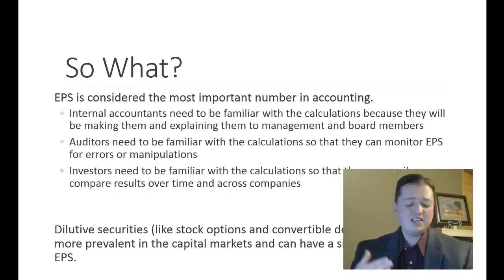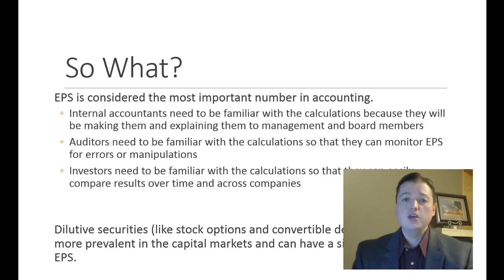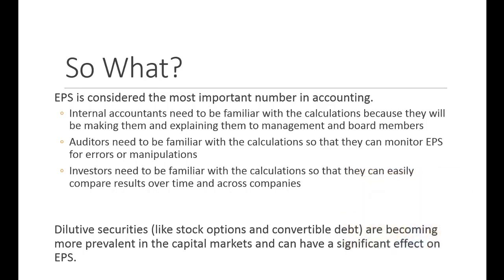So this number is checked and double-checked, but it's also played around with so companies can report the numbers investors want to see. Now, along with basic earnings per share, there's a new kind we're introducing: diluted earnings per share. Diluted EPS is based on securities that allow investors to buy, convert, or otherwise obtain shares of stock — including stock options, convertible debt, convertible preferred stock, and similar instruments. These types of securities are becoming really popular in the market.